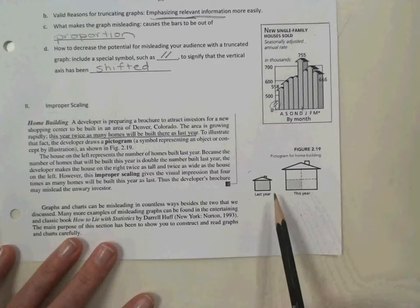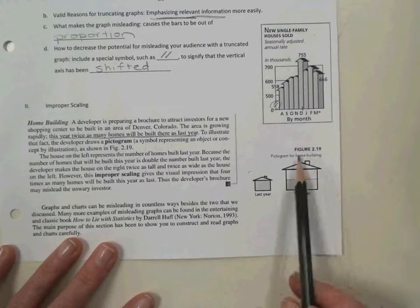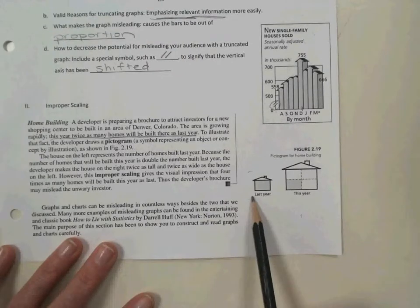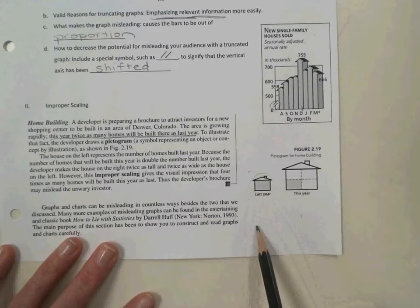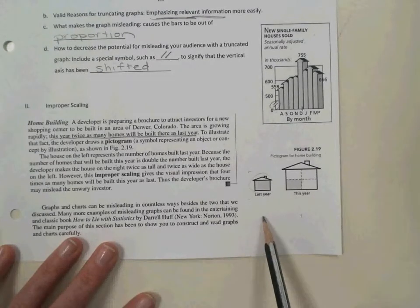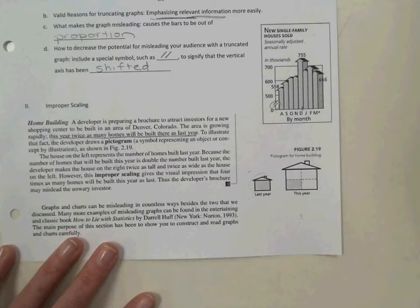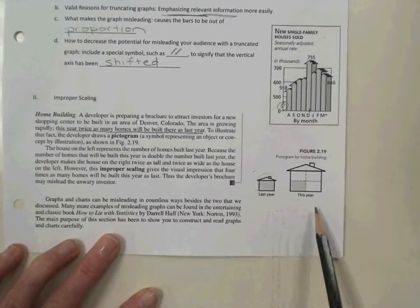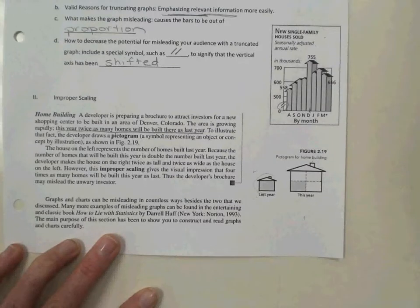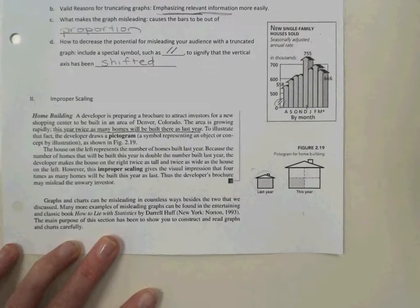There you go. This house is four times the size, not twice the size of our little last year's house picture right here. So that's misleading. Improper scaling. They doubled the length and they doubled the width, which quadruples the area. And that's why that happened, right?